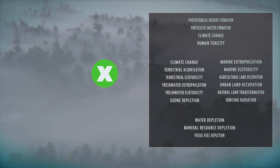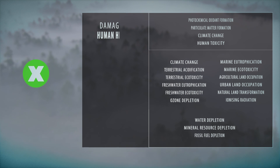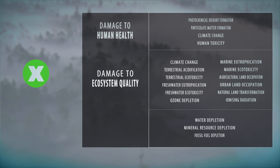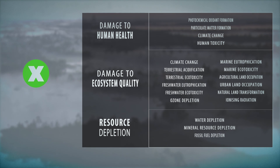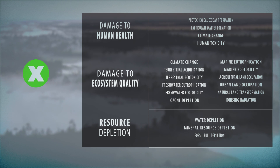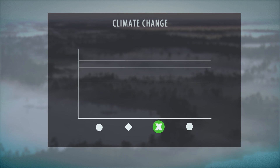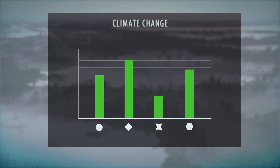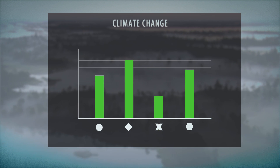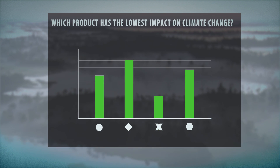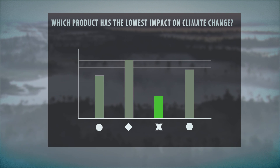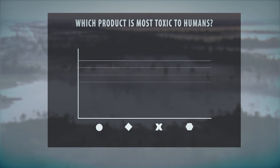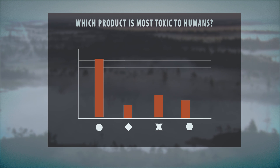These indicators are grouped in damage to human health, damage to ecosystem quality, and resource depletion. This way, products can be compared by using specific environmental themes. This allows us to answer questions like: which product has the lowest impact on climate change? Or, which product is most toxic to humans?